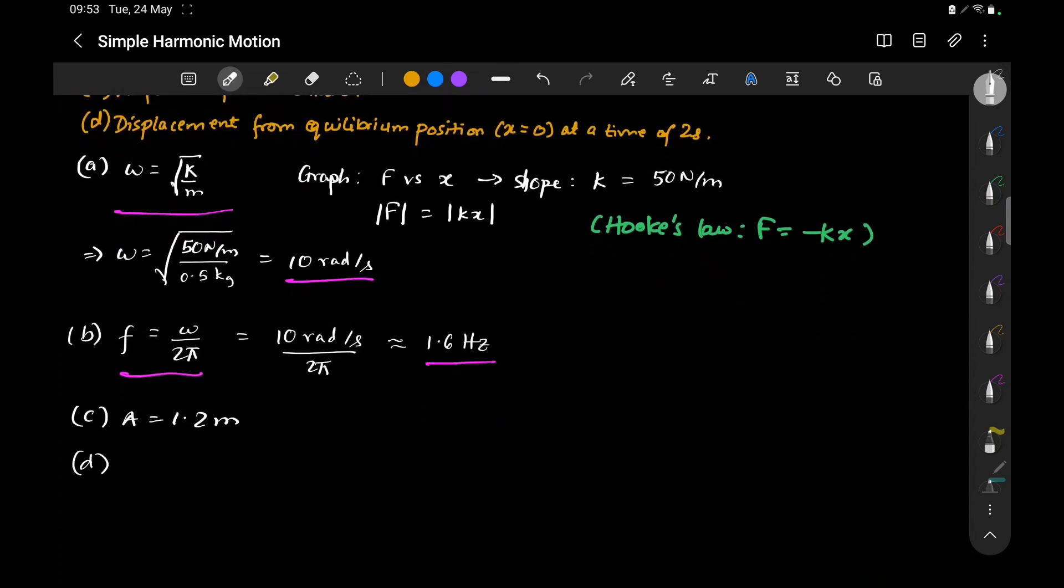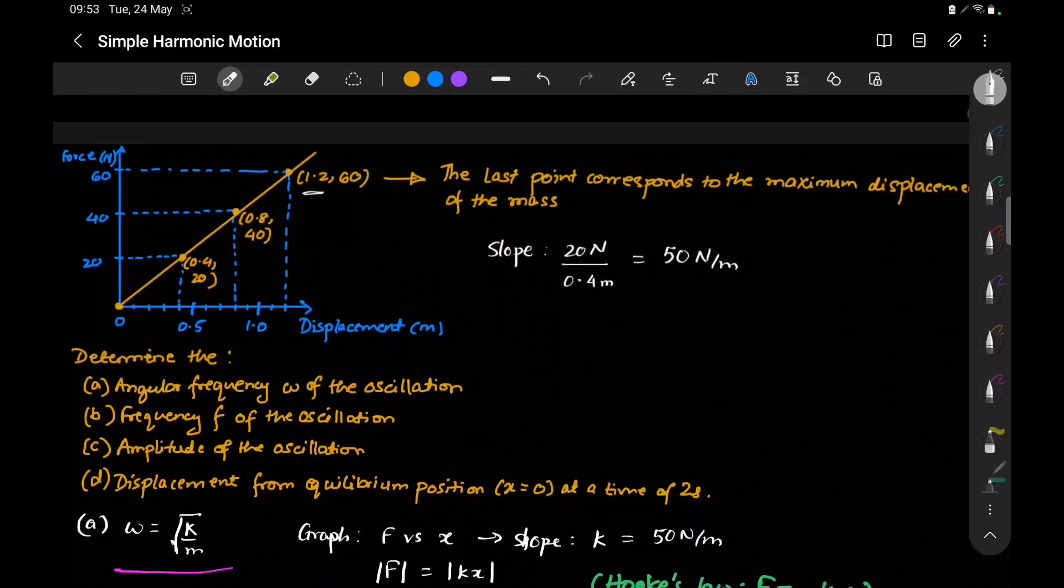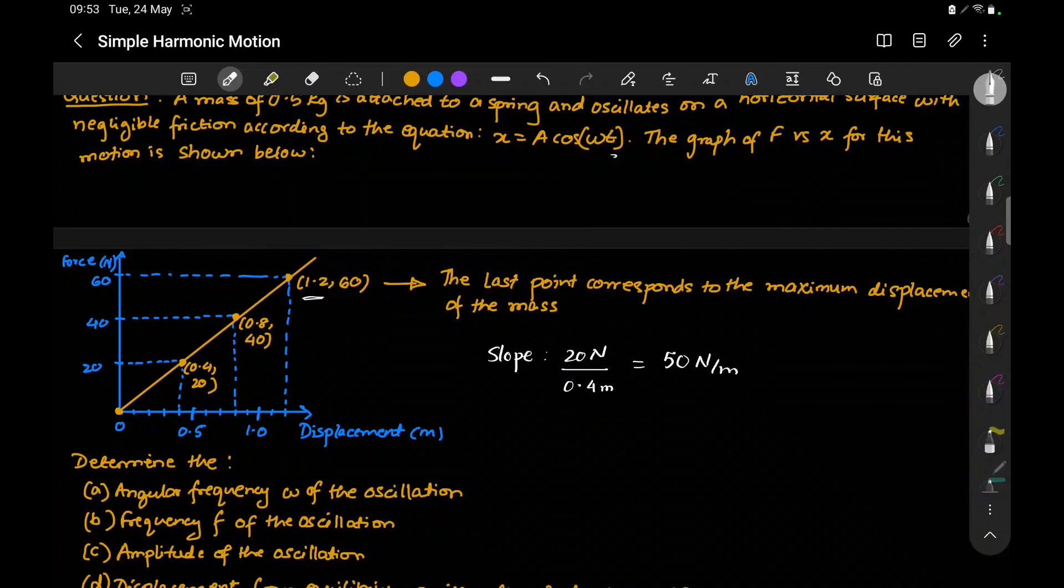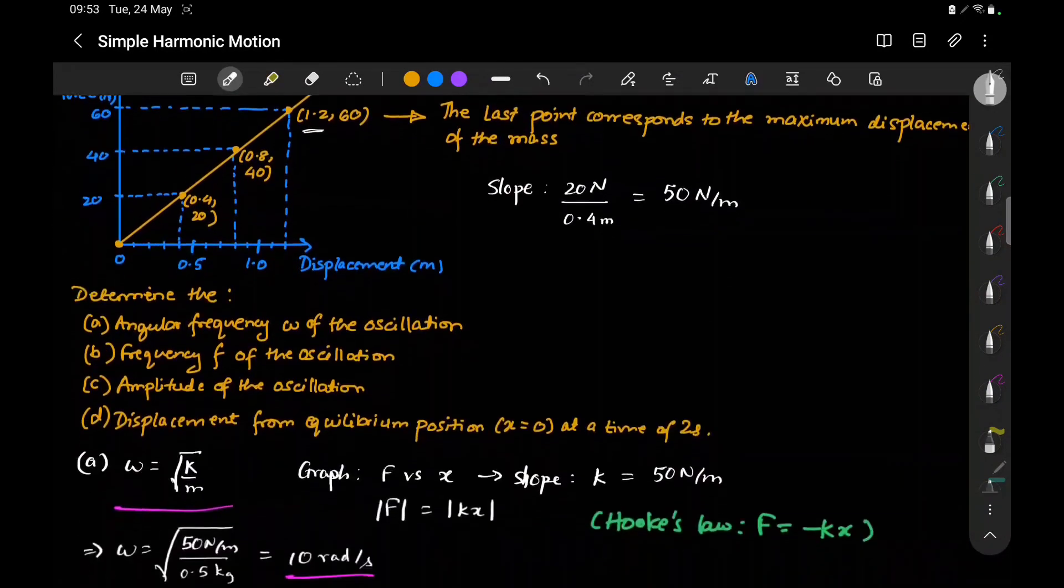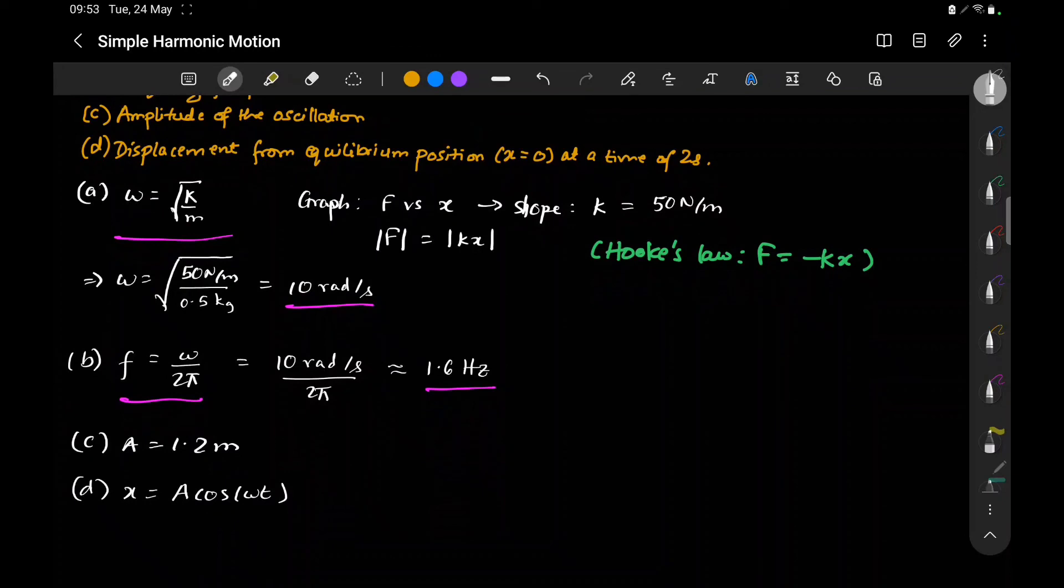For the last part, we use x = A cos(ωt) given in the question. We've found A and ω.